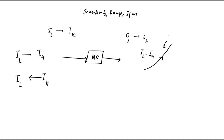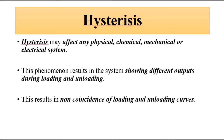When the input is decreased, the output does not follow the same path. The output values do not coincide with the increasing path. During increasing input we get a different output, and during decreasing input we get a different output. This difference between the output values depending on whether input is increasing or decreasing is called hysteresis.